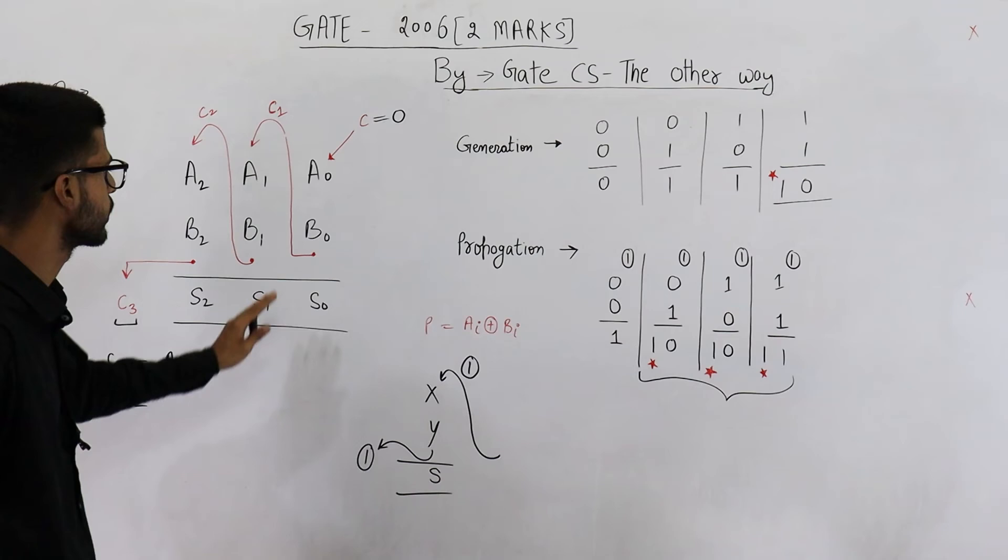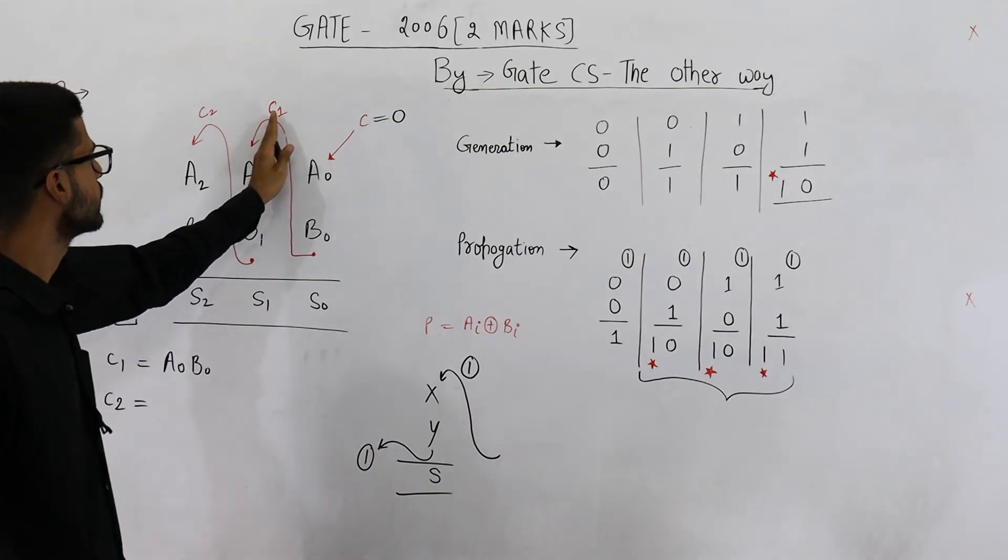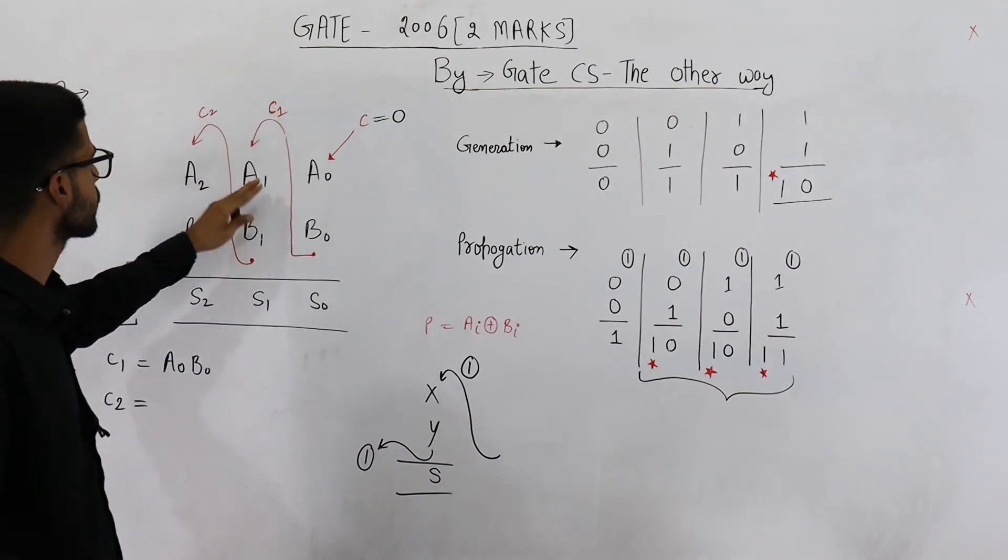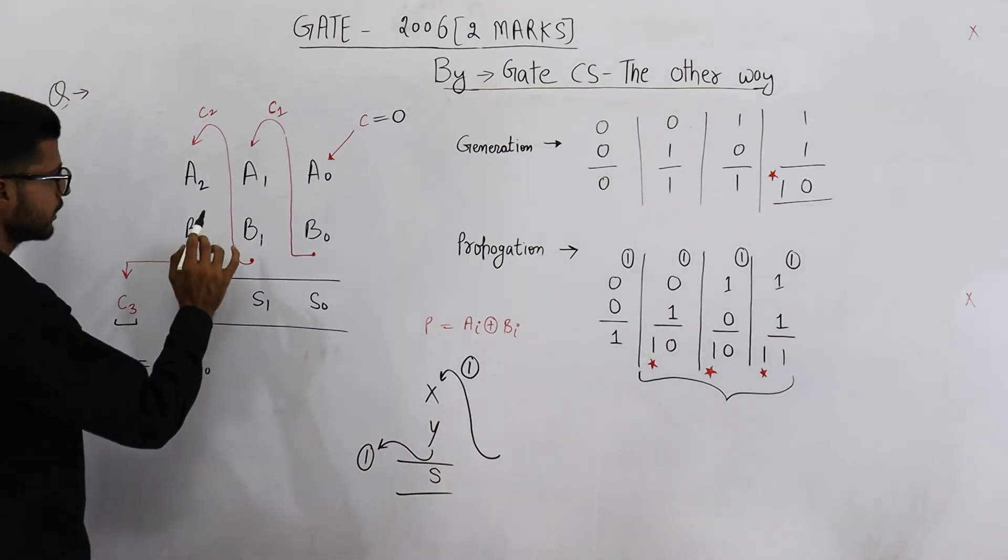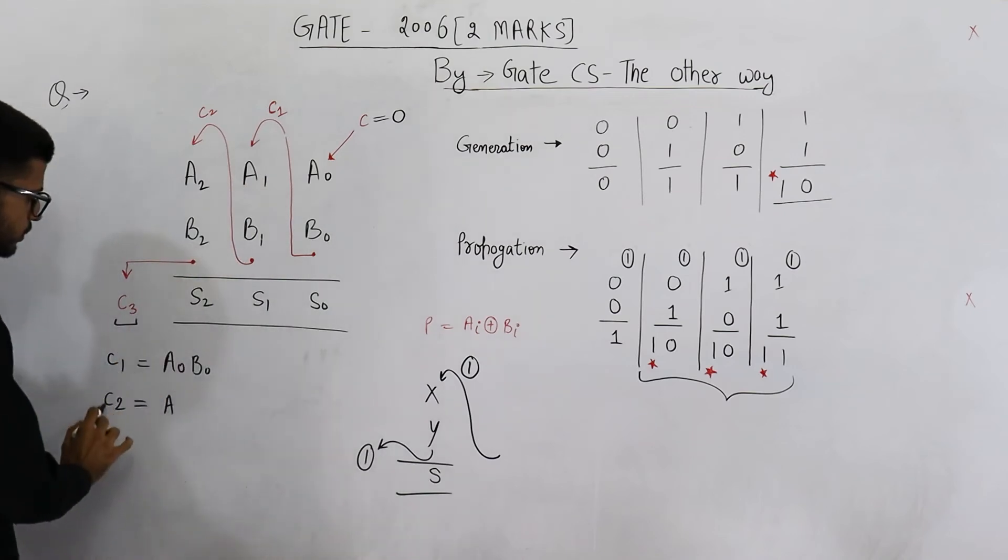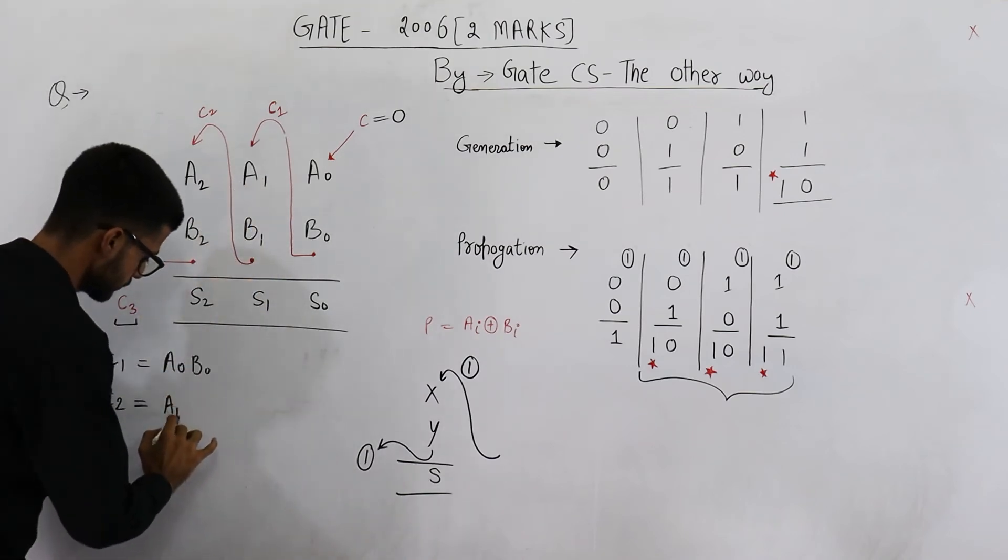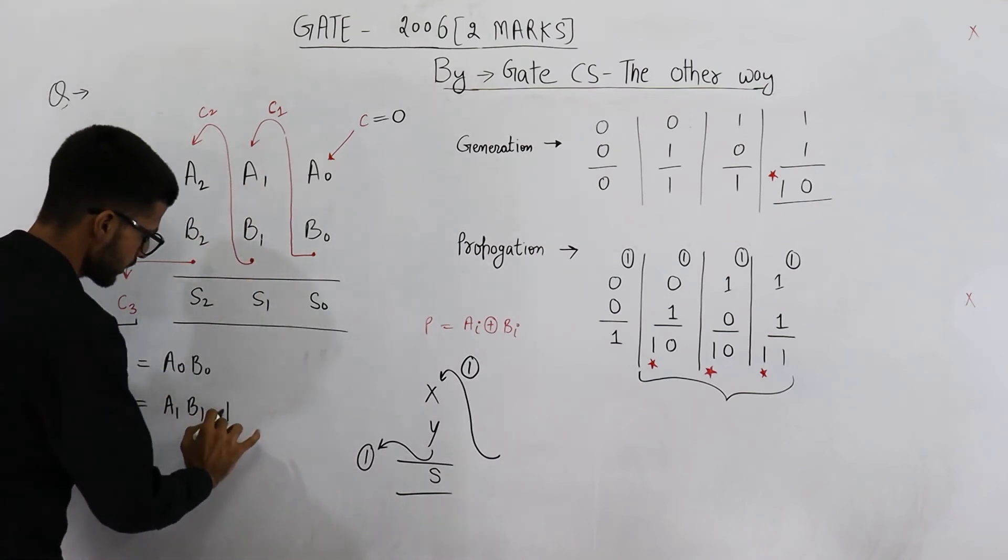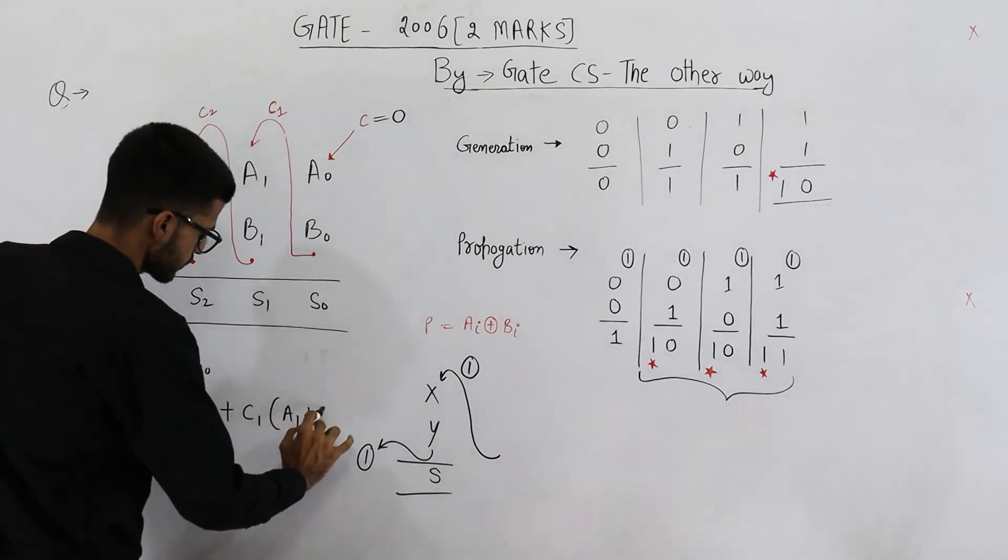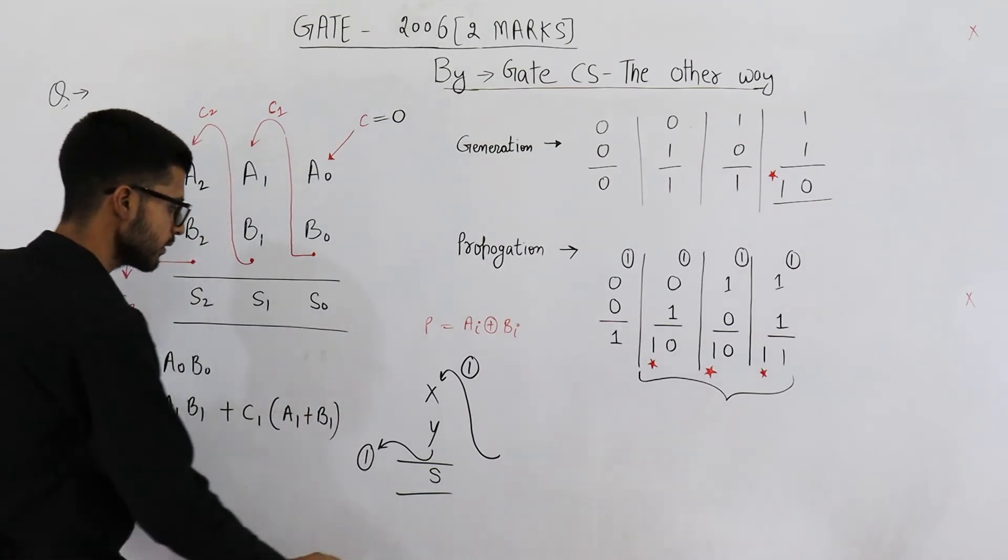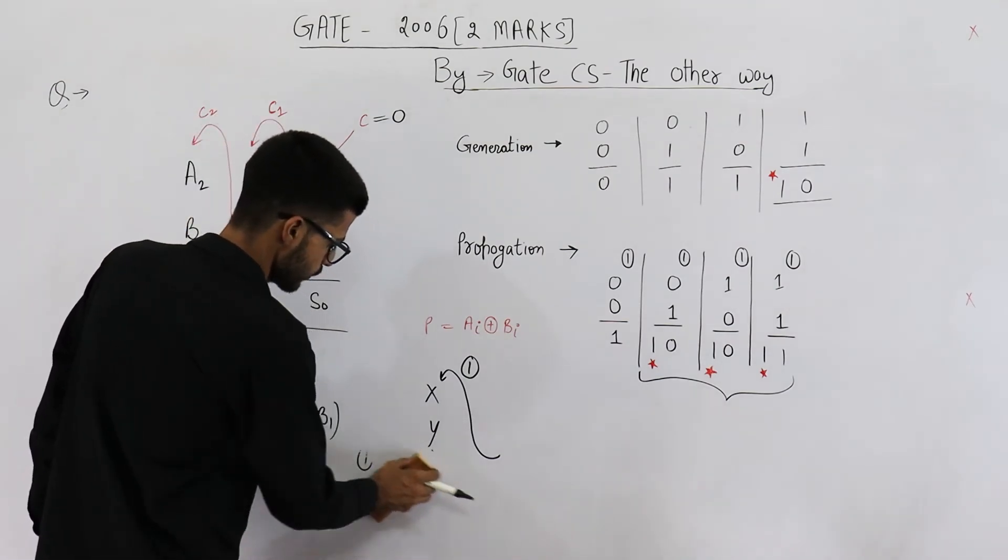Now let us move on to C2. Here the carry can be propagated. If C1 is 1, there is a possibility that this stage propagates this carry. Anyways, we'll discuss about it. C1 will be, sorry, it is C2. C2 will be A1, B1 plus C1 into A1 plus B1.